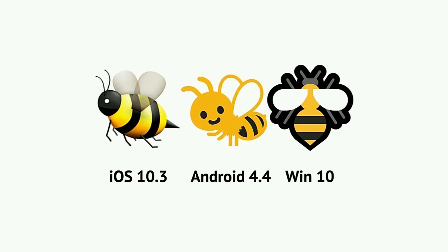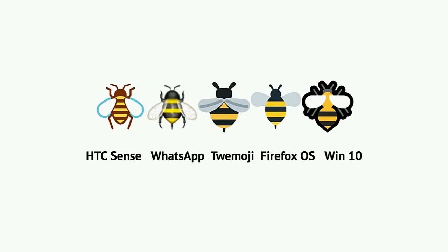If you're on iOS it'll look like the first one. If you're on Android, the middle one. And if you're on Windows, it'll look like the one on the end. It all depends what platform you're running. A lot of the bees are standardised, which is great — standard bees for everyone. They all look the same, they've all got two wings, sometimes they have legs, they have a stinger.